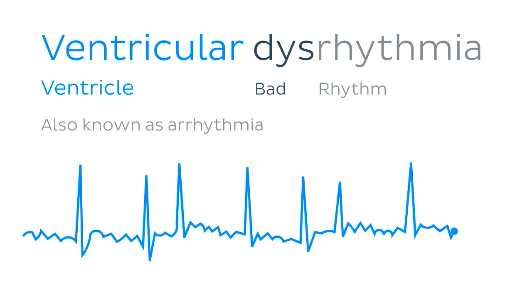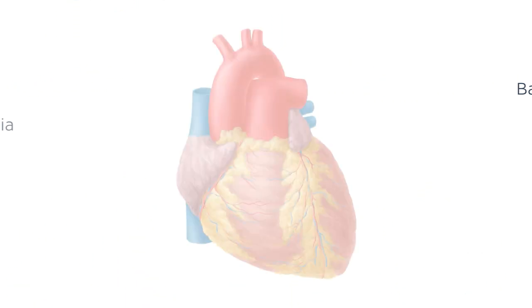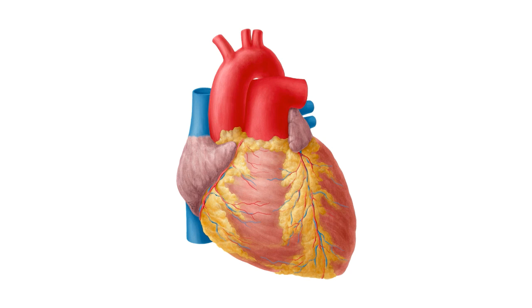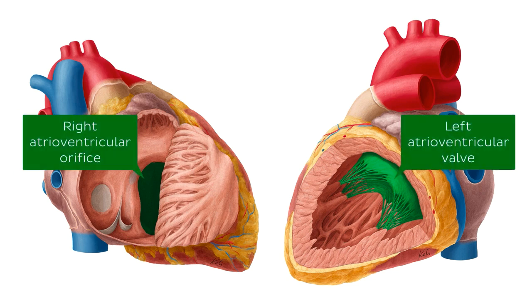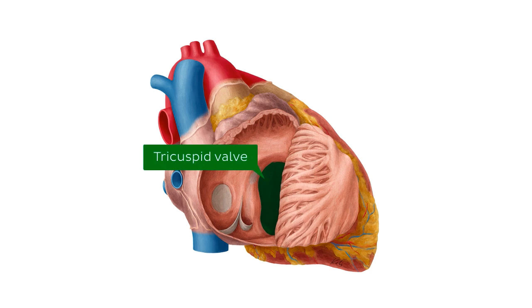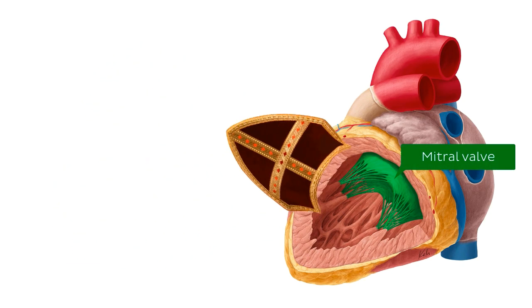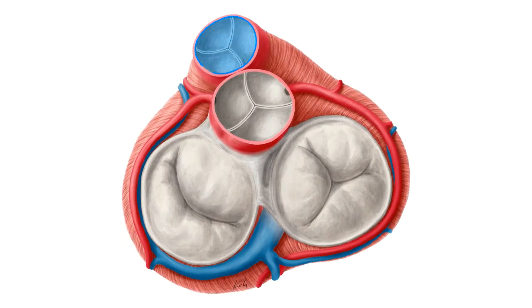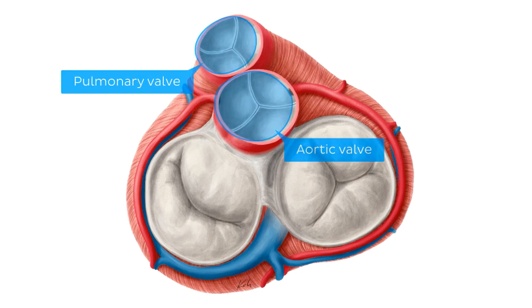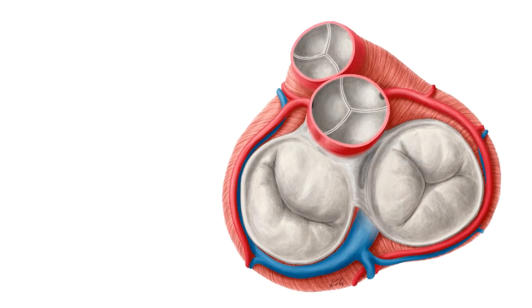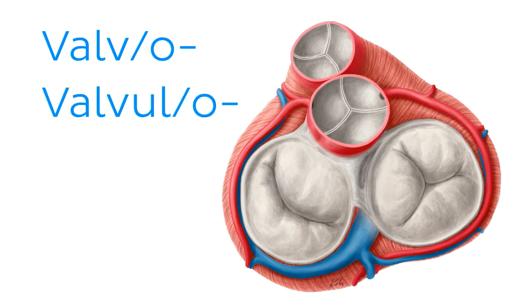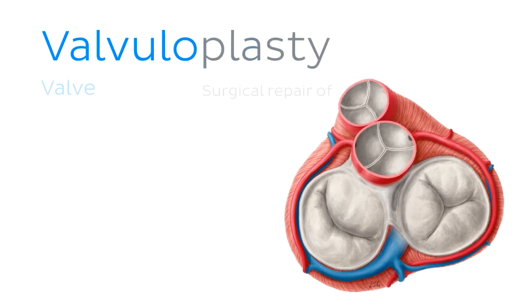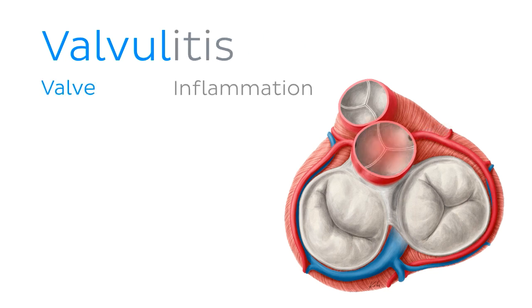Within the heart, there are four openings or orifices, which are flanked by sets of valves of the same name. Between the atria and ventricles, we have the right and left atrioventricular valves, also known as the tricuspid and mitral valves, respectively. And as blood leaves the heart, it passes either via the pulmonary or aortic valves. In terms of valve terminology, we have the roots valve or valvulo, which can be found in terms like valvuloplasty, a surgical repair of a valve, or valvulitis, the inflammation of a valve.